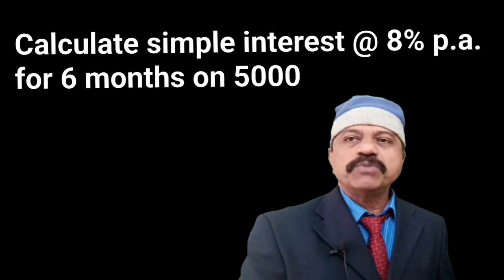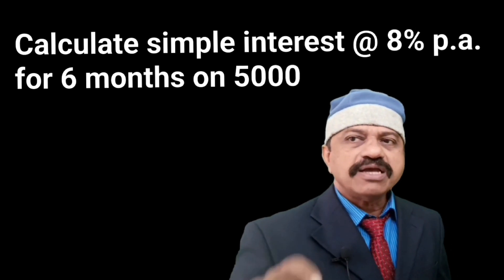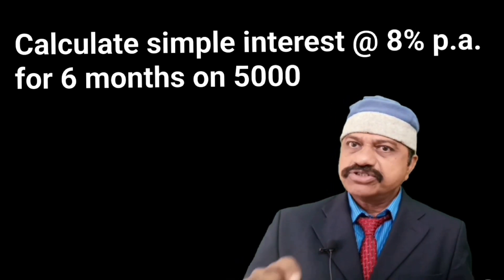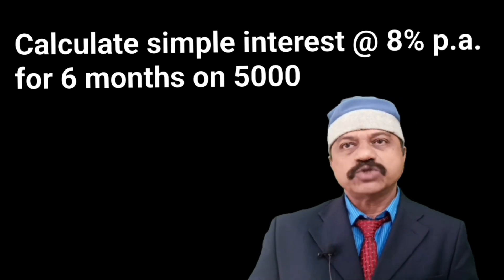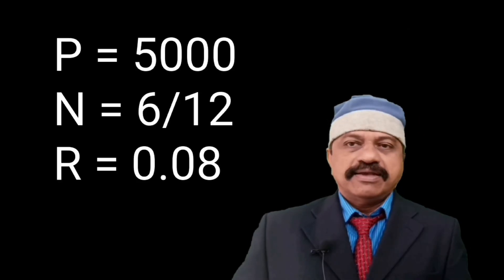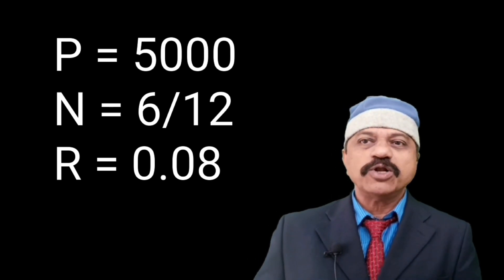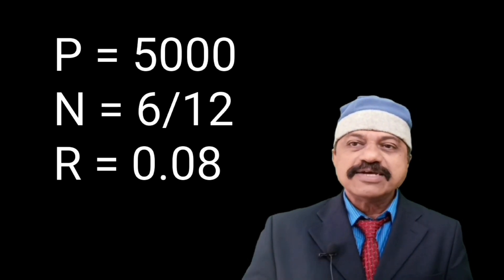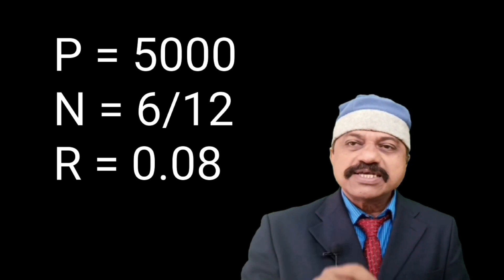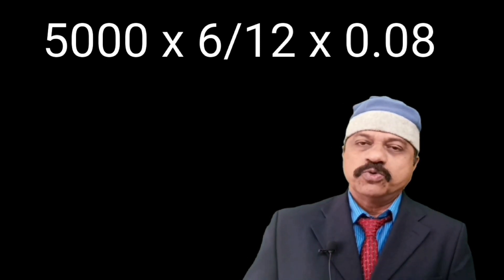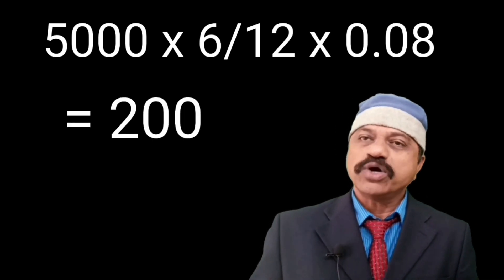I shall give you an example. Calculate simple interest at the rate of 8% per annum for 6 months on 5,000. Here P is equal to 5,000, N is equal to 6 divided by 12, and R is equal to 0.08. The answer is 200.